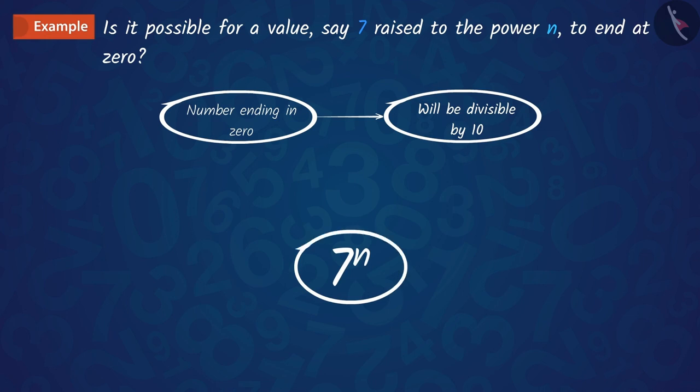Based on this, we can say that there is no natural number, which has the power of 7 raised to n, whose last digit is 0.